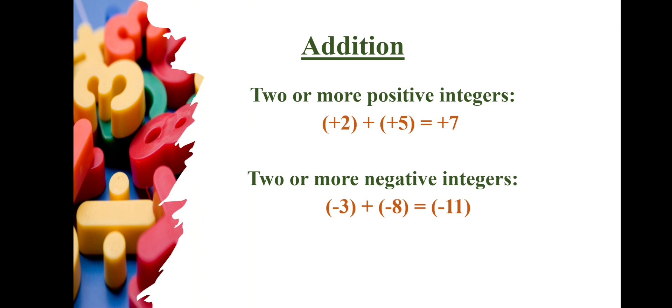When adding two positive integers we always get a positive integer, and when adding two negative integers we always get a negative integer. The sum of two positives is positive, and the sum of two negatives is always negative.